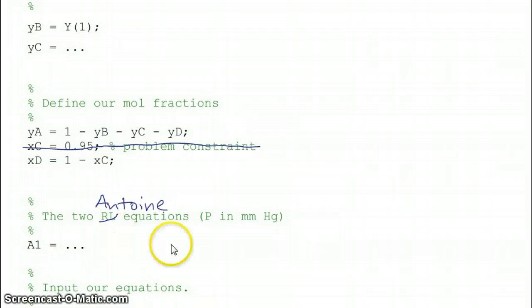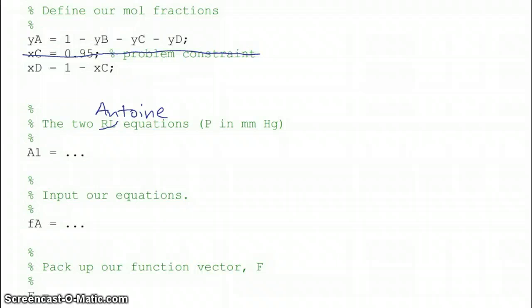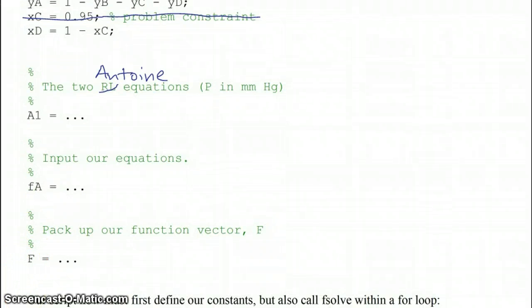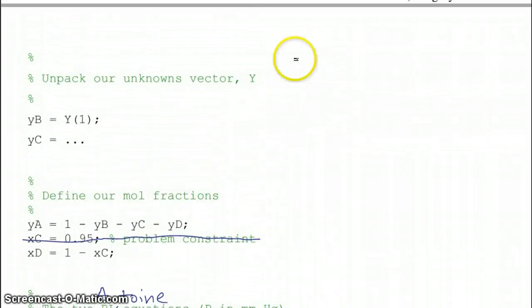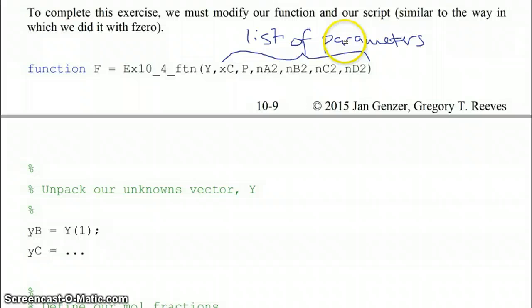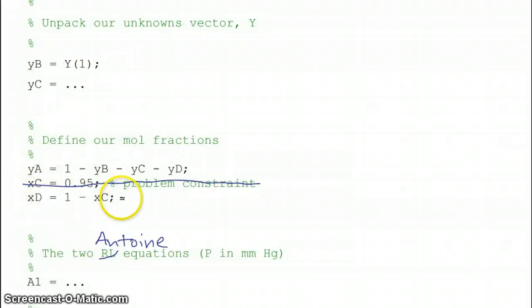We have our two Antoine equations. This is supposed to say Antoine here as before. Then we're going to input our equations as before, and then finally pack up our function vector F as before. In general, you can see that this function looks basically the same as it did in the previous example, with the exception that we have a list of parameters here, which we then don't have to define down here anymore.